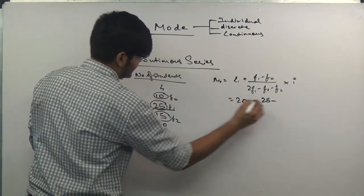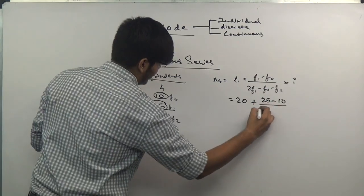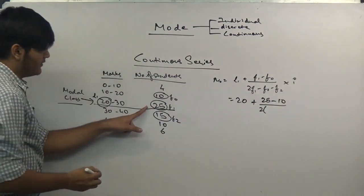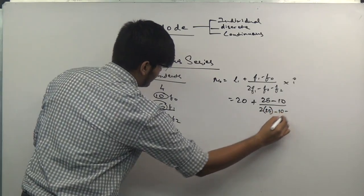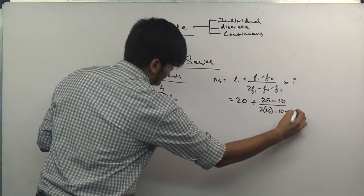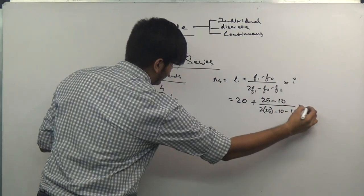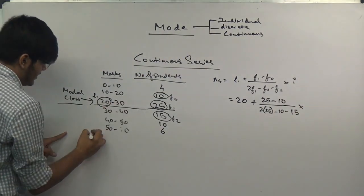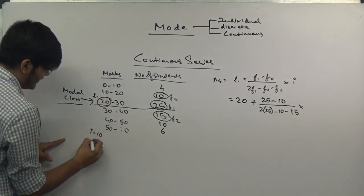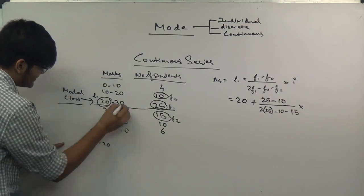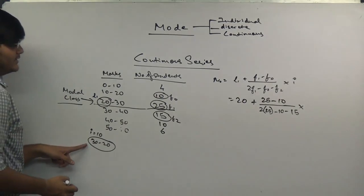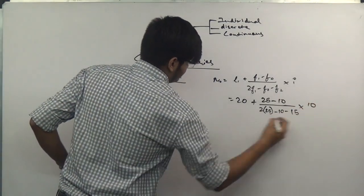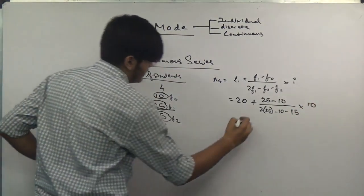f1 is the frequency. This is f1 which is 25, this is f0 which is 10, and this is f2 which is 15. So we have 20 plus (25 minus 10) divided by (2 times 25 minus 10 minus 15) multiplied by i which equals 10. The class interval is 30 minus 20, which is 10, the gap between the upper limit and the lower limit.